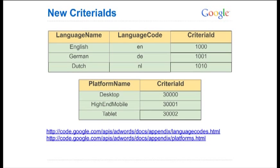In the process of moving our targeting types into the campaign criterion service, we needed to have criterion IDs for all these new targeting types. Looking at platform targets, for example, we have three platform targeting criteria: desktop, high-end mobile, and tablet. What's interesting is that they have unique static criteria ID values, because there's only one row in our criteria table representing each of those platform target types.